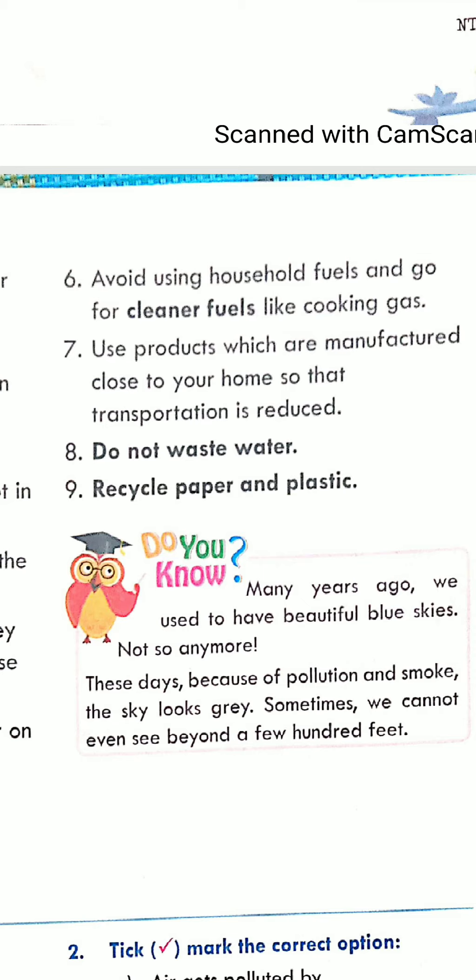The next one is: recycle paper and plastic bags. Instead of directly dumping plastic bags, we can recycle them. With recycling, we can save paper from being made from trees, and if we don't dump plastic, we can control pollution. These are all the things that every individual can do to participate in reducing air pollution.